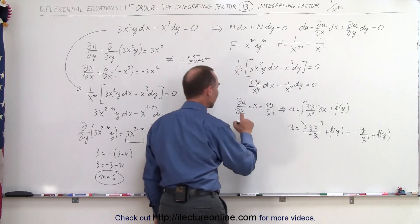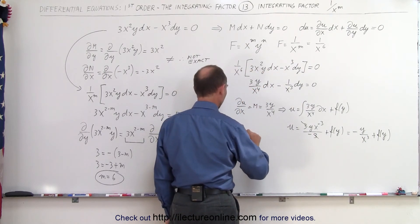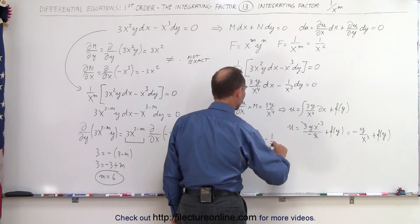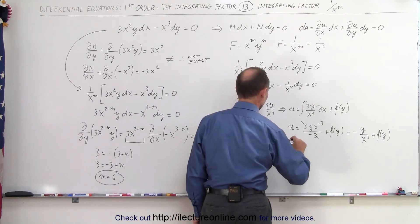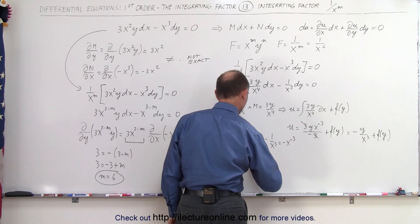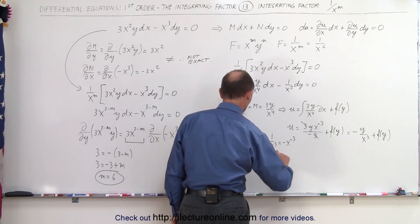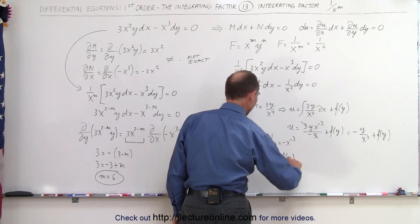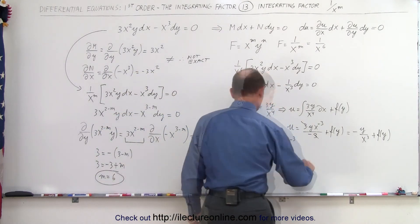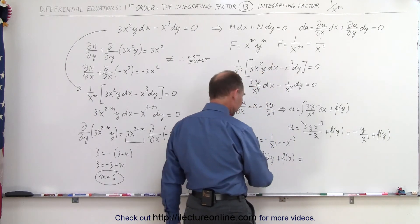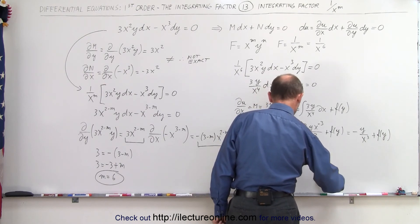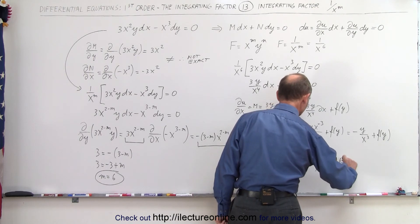Now let's use the other part of the equation. The partial of u with respect to y equals N, which equals minus 1 over x cubed, or minus x to the minus 3. So u equals the integral of minus x to the minus 3 dy plus a function of x, since x is treated as the constant. Integrating with y as the variable gives u equals minus y over x cubed plus a function of x.